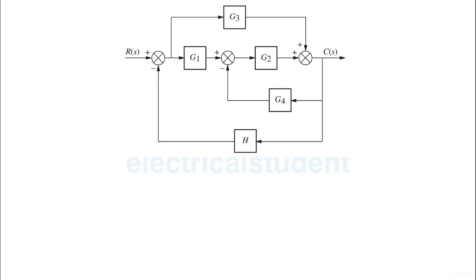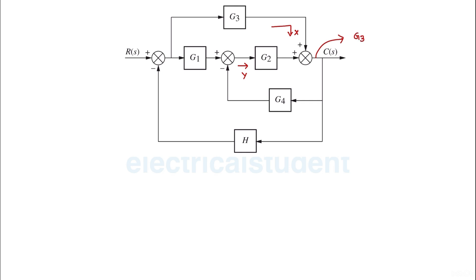This is another block diagram reduction technique problem. The problem is very simple - you just shift this summing point to here and club it with the existing summing point. To do this, from one end a signal y is coming and from the other side a signal x is coming, so at this junction the resultant signal will be g3 times x plus g2 times y.